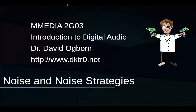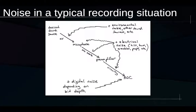This module is about noise and strategies for controlling or reducing noise. On this slide we have a diagram of a very typical recording situation: we have some kind of desired sound source, and we're attempting to capture sounds from that source with a microphone, which is connected to a preamplifier and then to an analog-to-digital converter — these last two stages often being combined in an audio interface or field recording device.